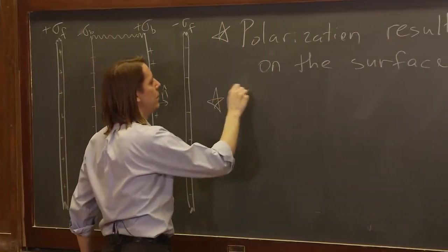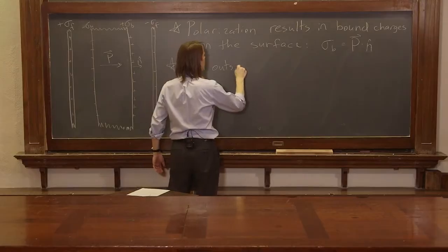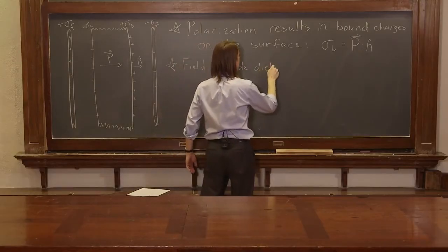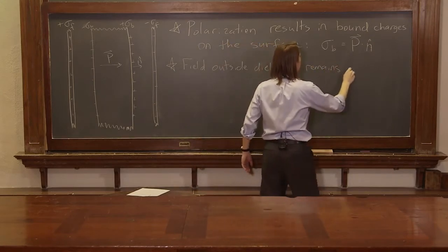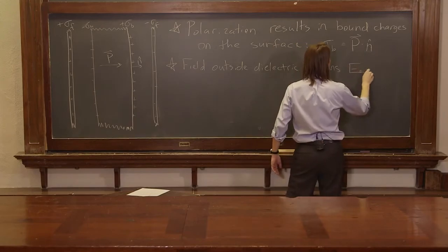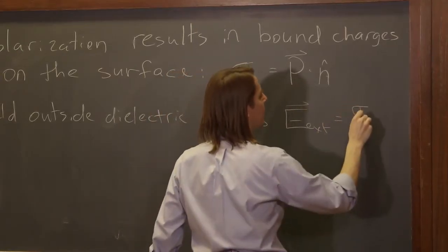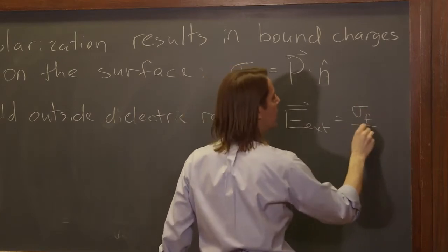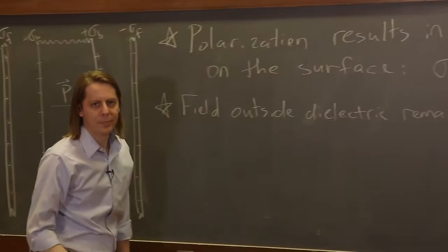So let's look. The field outside the dielectric remains E. I'll still call it E external because we're outside the dielectric. It remains sigma, which I'll now call sigma free, over epsilon naught. And since I've put a vector hat on it, I'll say i hat.